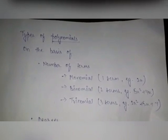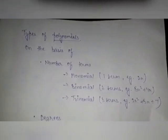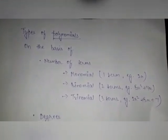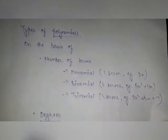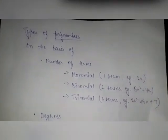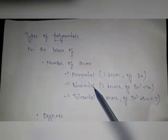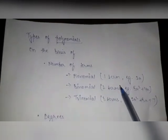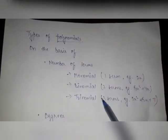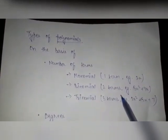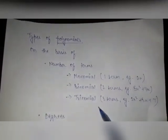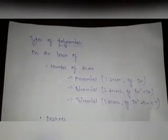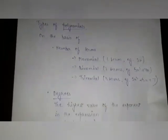Now we come to the types of polynomials. We can categorize them on the basis of either number of terms or degrees. Based on terms, we categorize them into monomial, binomial, and trinomial. A monomial has only one term, for example 2x. A binomial has two terms, and a trinomial has three terms — for example 2x² plus 5x plus 7.